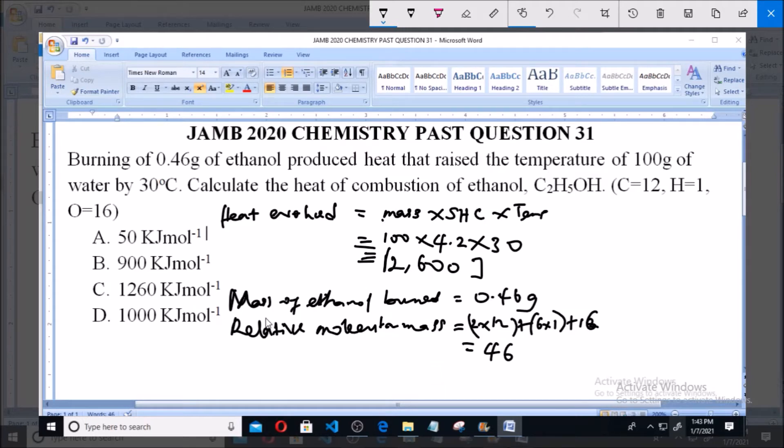Number of moles of ethanol combusted equals 0.46 divided by the molecular mass of 46, which gives us 0.01 mole. So 0.01 mole is the number of moles of ethanol that was combusted.